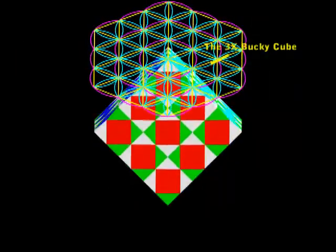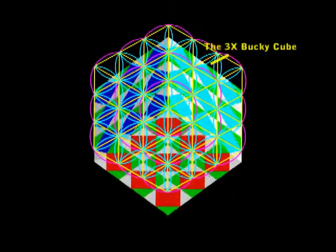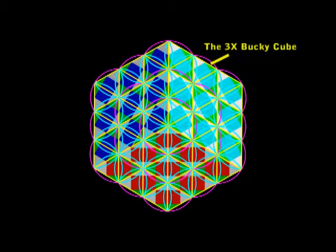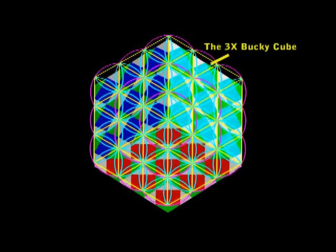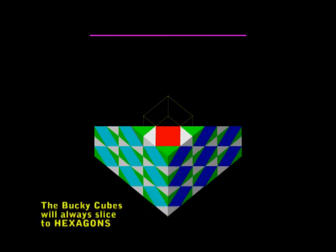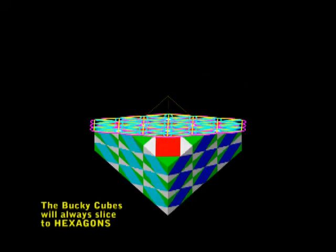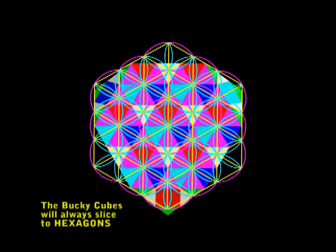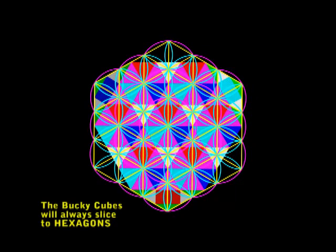Let's take the Bucky 3x to the top view. Again, you can see that we have a spot-on match. We'll take the Bucky back to the front position and we'll give it a slice into a perfect half. Now we'll drop the flower of life and put it next to the new face. We have a face that shows hexagons, just like graphene.